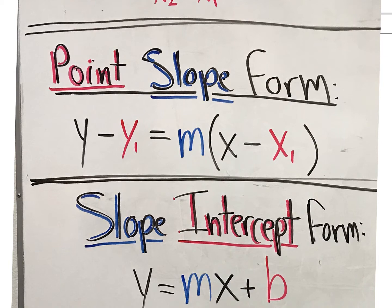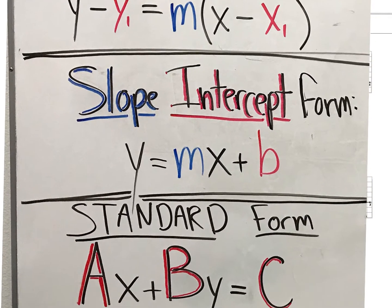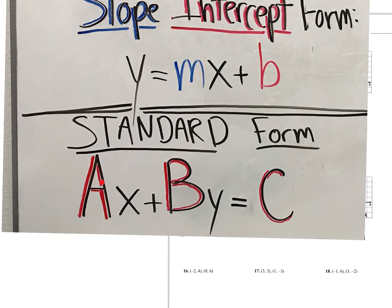We also already knew about slope-intercept form. This is probably the one we're most comfortable with — that y is by itself. It's called slope-intercept form because this value is the slope and this is the y-intercept, not the x-intercept. And also standard form: capital A x plus capital B y equals capital C. They're capitalized to help you remember that you don't want decimals or fractions.